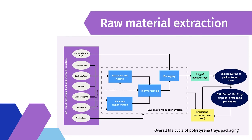Stage 1 — Raw Material Extraction: The Preparation of the Raw Materials for Polystyrene Tray Production. Raw materials used as inputs in making polystyrene packaging included polystyrene granulate, cooling water, butane, lubricating oil, electricity, natural gas, and LDPE and HDPE bags. These materials were required in the trays' production process.